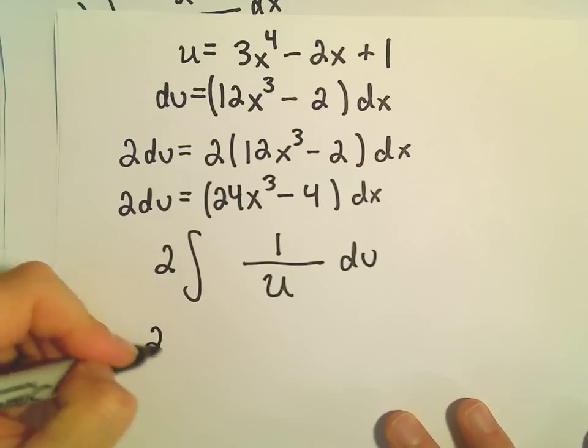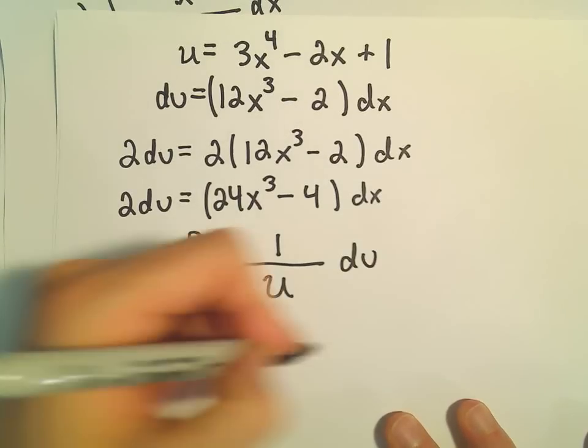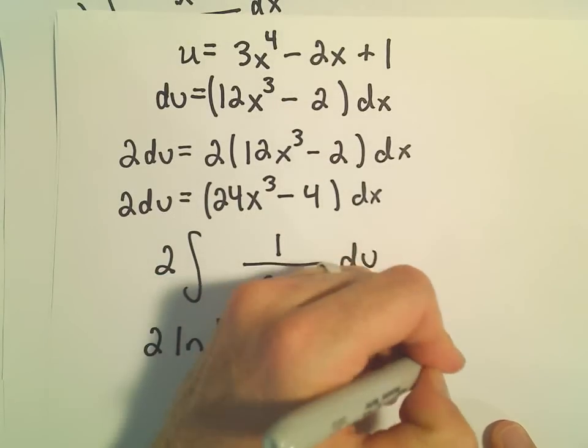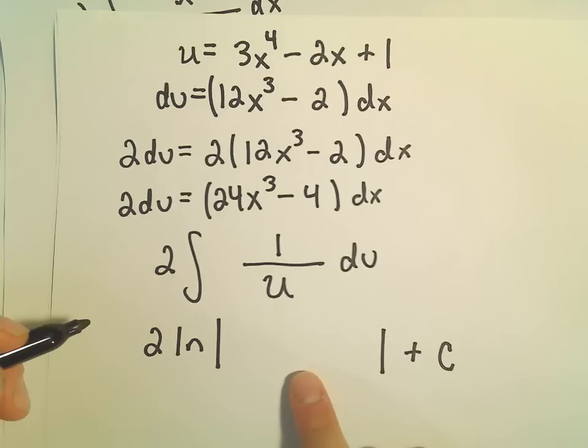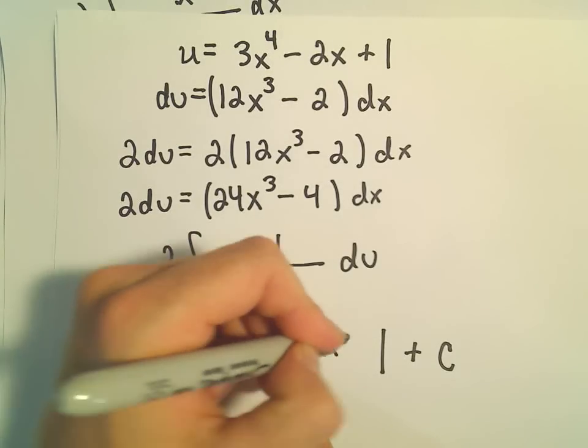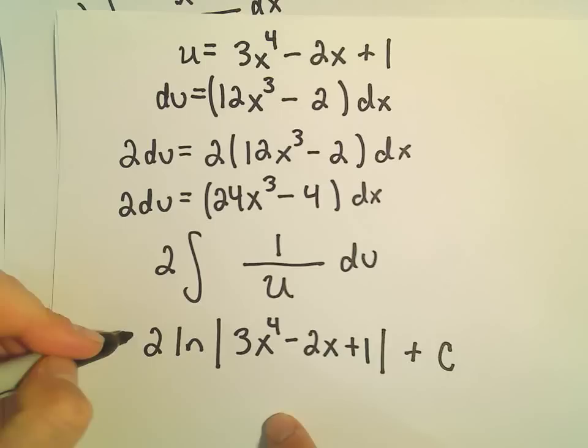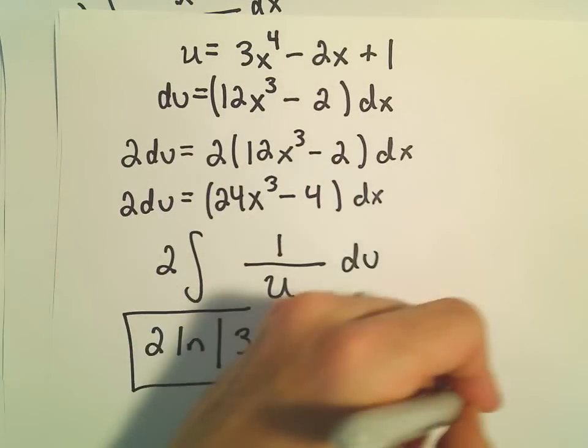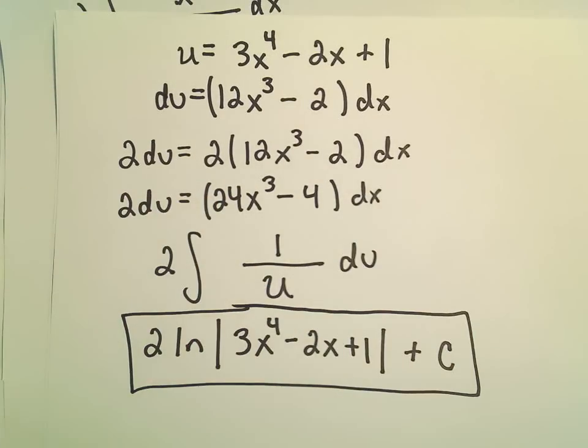And again, now if we integrate, we just get the natural logarithm of the absolute value of u. But I'm just going to plug our u substitution back in. That's 3x to the fourth minus 2x plus 1. And again, we've now found our anti-derivative.